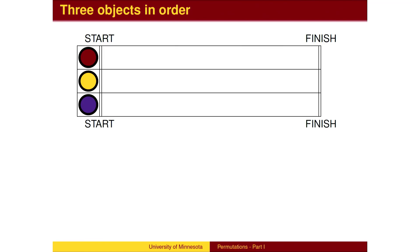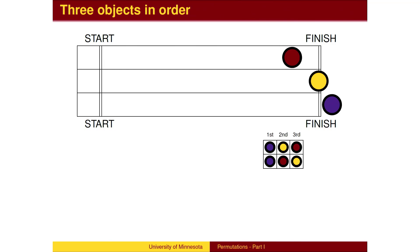Now suppose there is a third runner from the purple team. In how many different orders can they finish? First, we must determine the winner. Suppose purple wins. We then must determine the places of the two remaining runners. Notice that this is precisely the previous example.